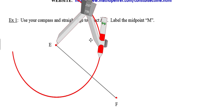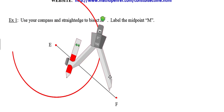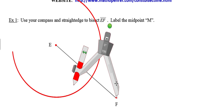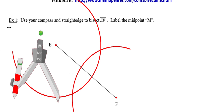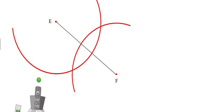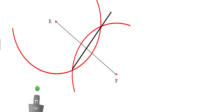Here's the most important part of the construction: you need to keep the compass setting the same. Without changing the compass setting, flip it around and place the point of the compass at endpoint F. Using the same setting you used for the arc from center E, construct the arc from center F — again, a nice big arc. We're looking for the spots where those two arcs intersect. Use those intersection points and connect them with your straight edge.